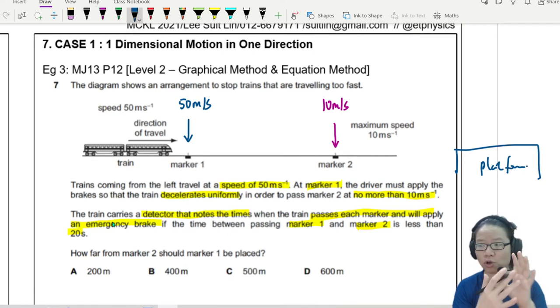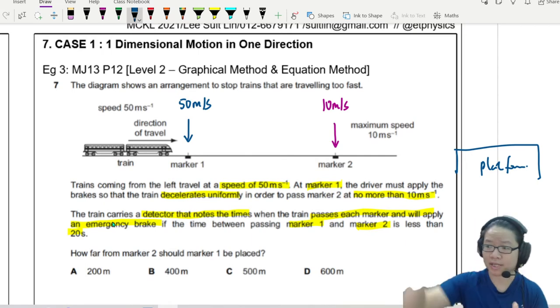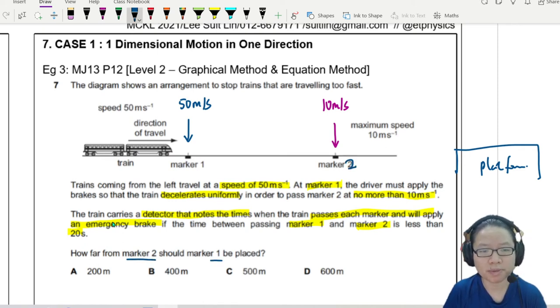So normally if you look at the train system, especially the underground trains, you will notice that there are markers, detectors. So the question is asking, how far should marker 2 be placed from marker 1?